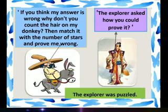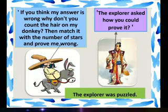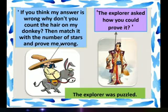Akio also said, 'If you think my answer is wrong, then you prove me — count the number of hairs on my donkey's body, match them with the stars, and prove that I am wrong.' Hearing that answer, the explorer was so confused and puzzled, not understanding what to say.